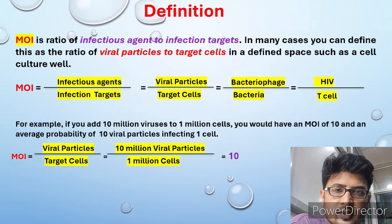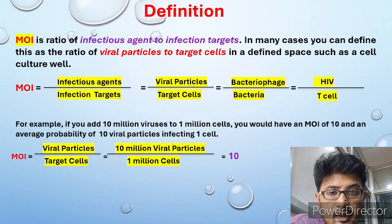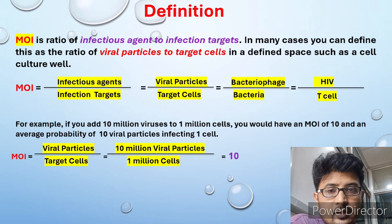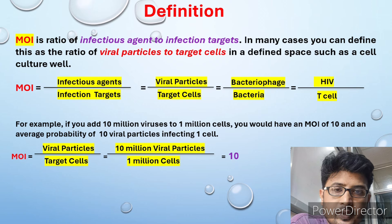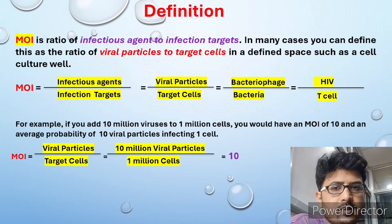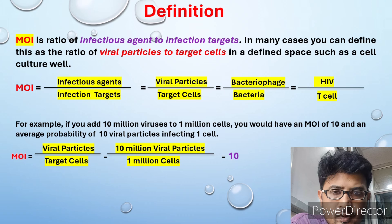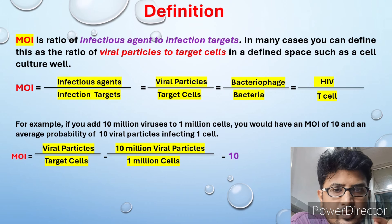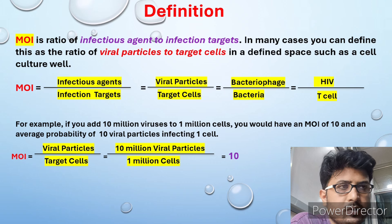We know that bacteriophage infects bacteria. Bacteriophage is a virus. In the case of animal viruses which infect animal cells, culture of the animal cells is done in a flask in a liquid medium on a layer basis. There you have to apply the virus for some experiment and you need to calculate the MOI.